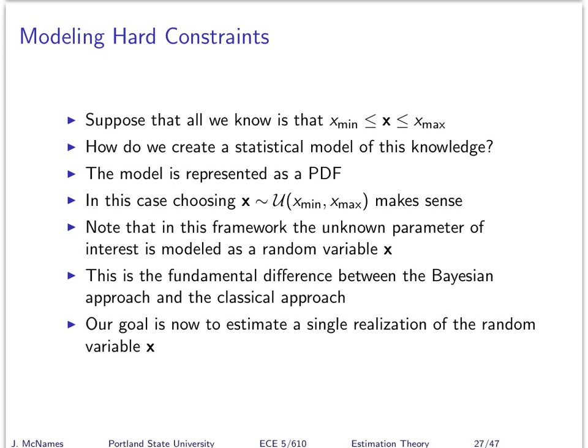What's different about the methods we're using is that rather than treating the thing we're trying to estimate as an unknown deterministic number, we model it as a random variable. So we assume what we're trying to estimate is itself a random variable — that's a different mindset. If X is a random variable and all you know is that it's bounded between those extremes, then how do you model it? What's its probability density function?